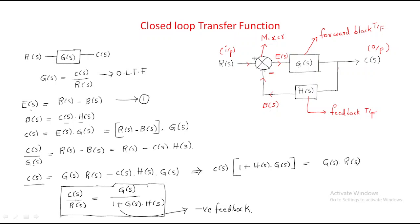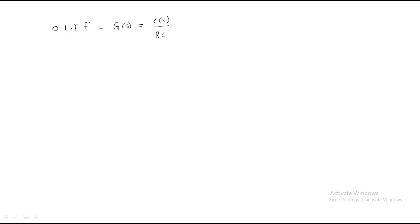To summarize: for the open-loop transfer function, G(s) = C(s)/R(s). But when a negative feedback gain H(s) is added, the closed-loop transfer function becomes G(s) / [1 + G(s)·H(s)]. We can also write a relation between the open-loop and closed-loop transfer functions.